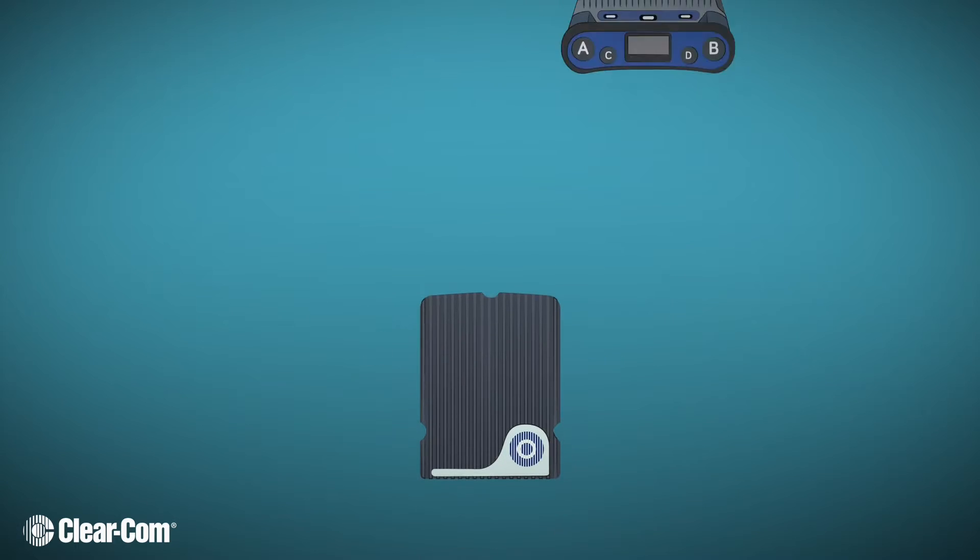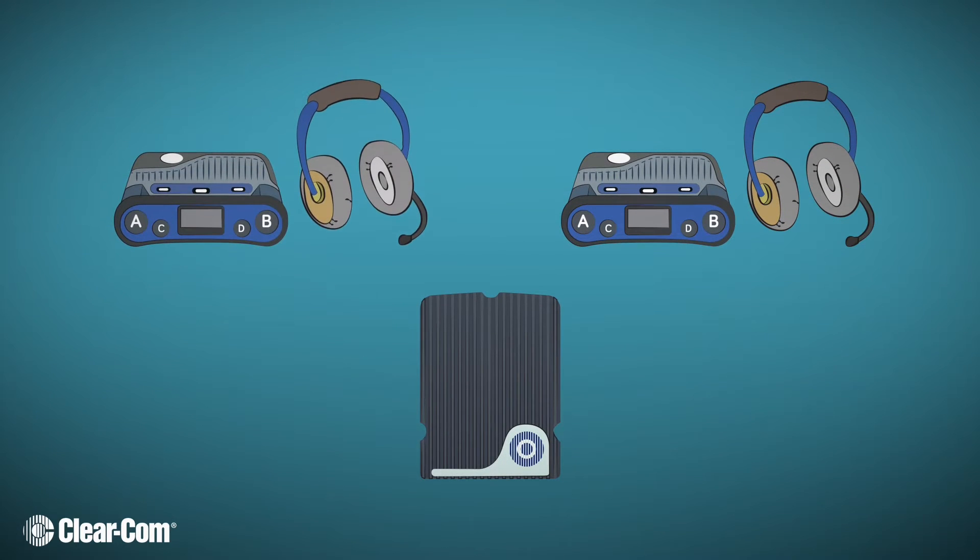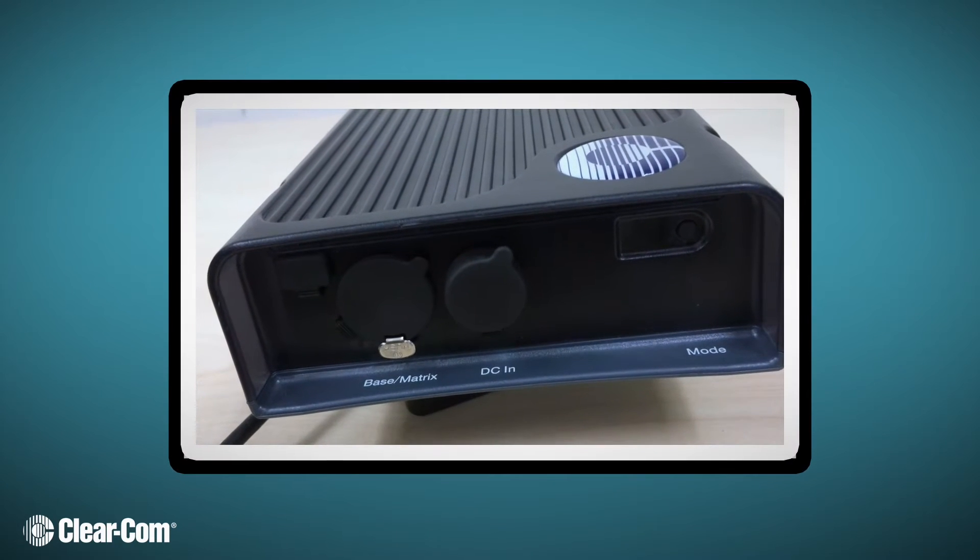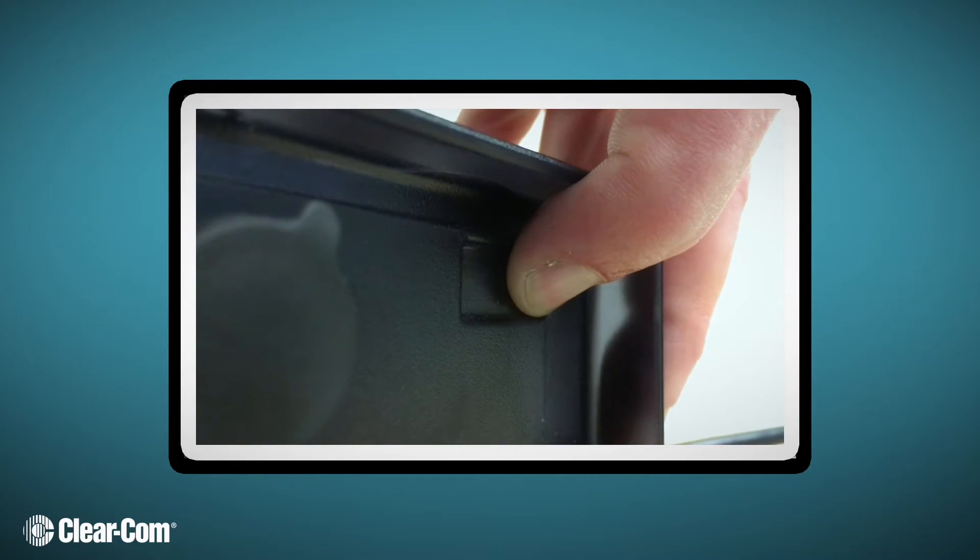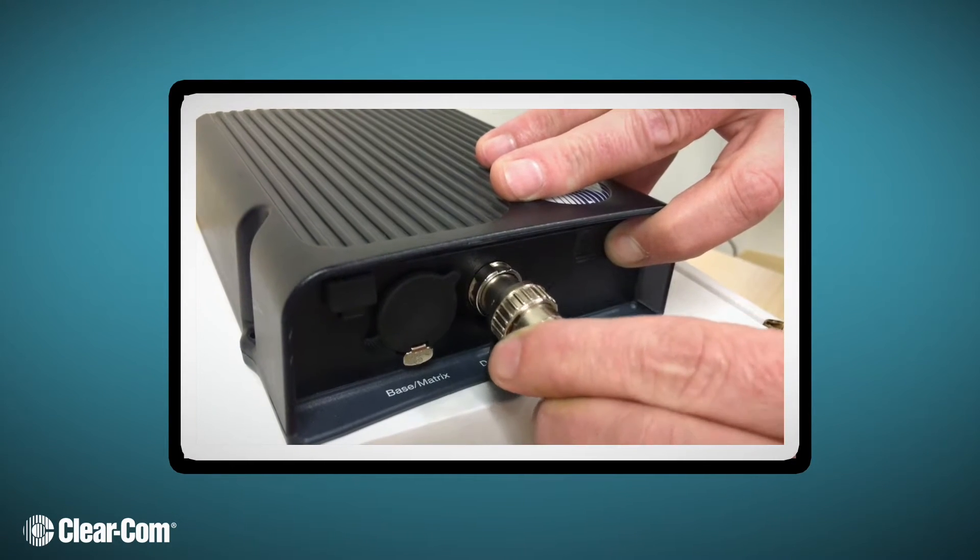First, you need two belt packs and one transceiver module to conduct this survey. Next, prepare your transceiver for the survey by holding down the power button on the transceiver and then applying power.